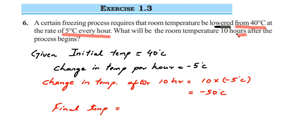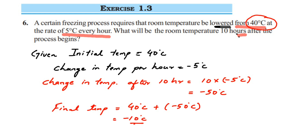We know that the initial temperature was 40 degrees Celsius. From 40, we have lowered by minus 50. So we add both temperatures: initial 40 plus the change of minus 50 degrees Celsius. When you add these two temperatures, we get minus 10. So the final temperature after 10 hours will be minus 10 degrees Celsius.